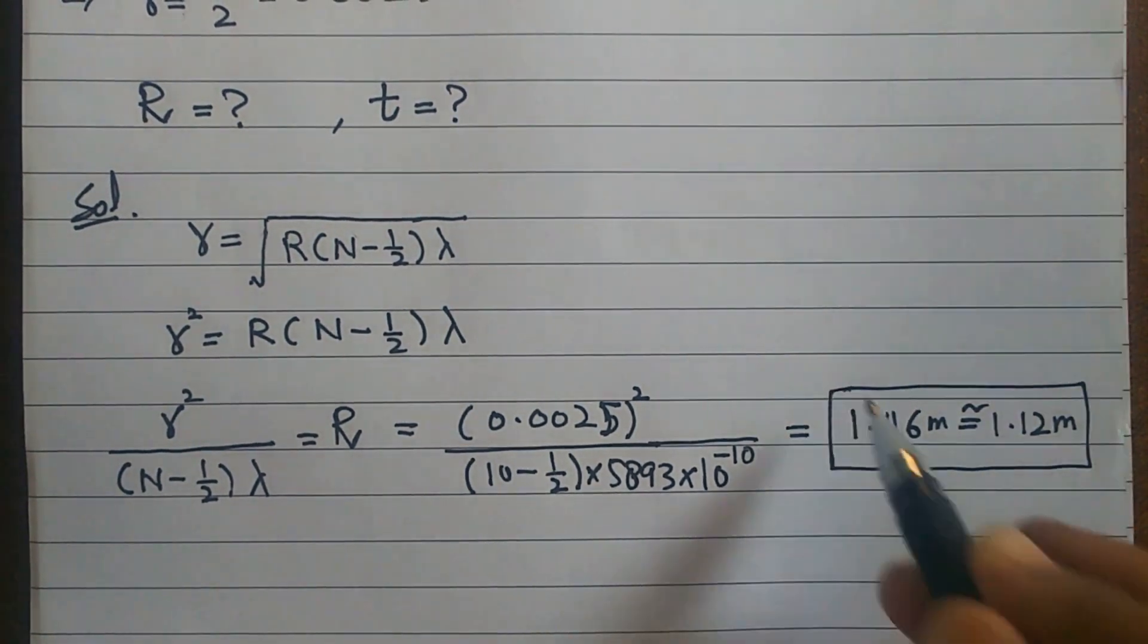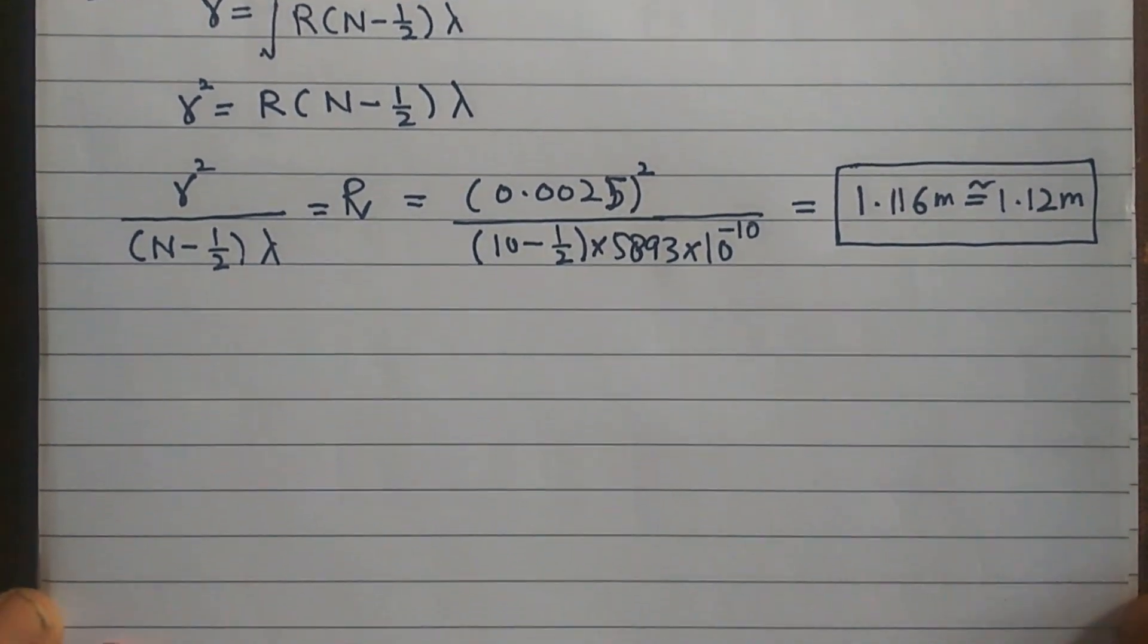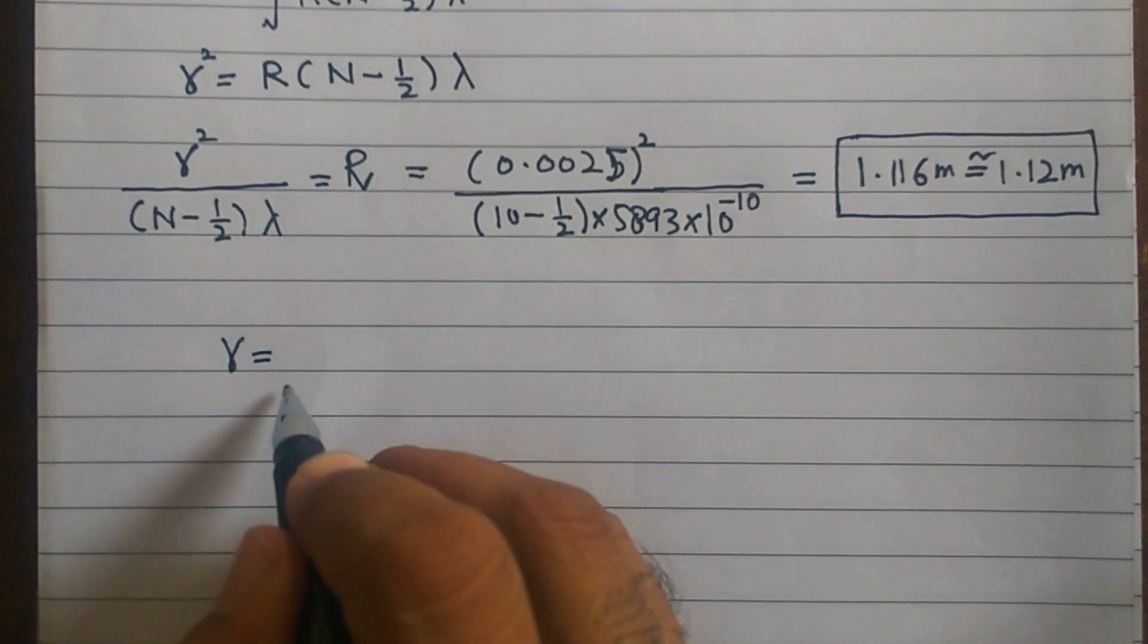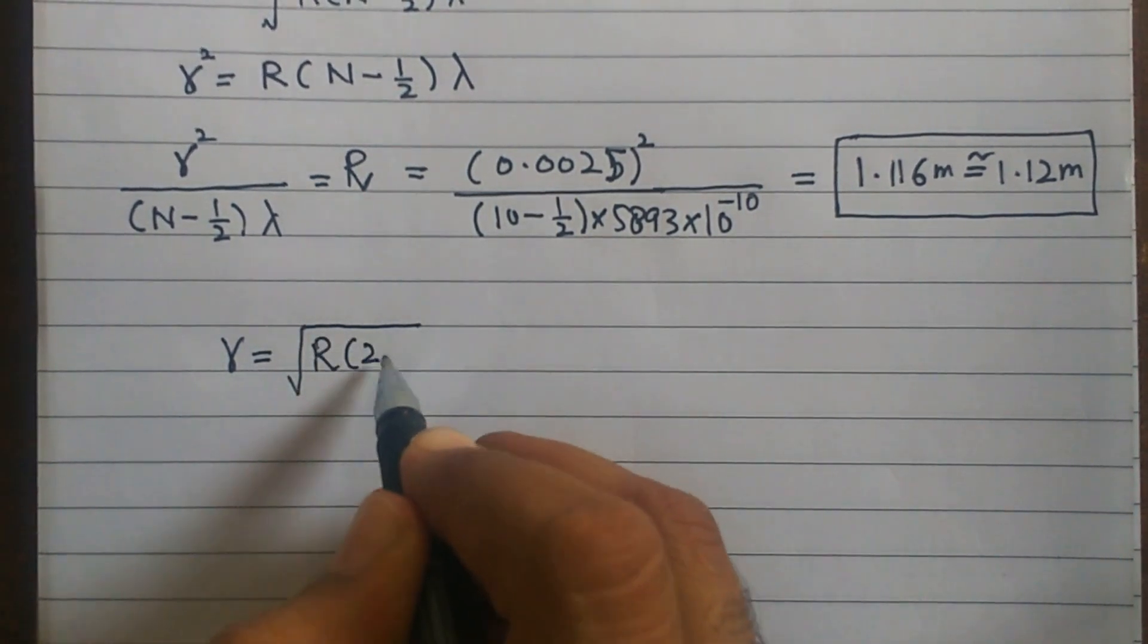Now the second part of the numerical is talking about thickness. If you have seen the theory video, I started explaining the formula here - that the radius of ring is basically capital R into 2T.